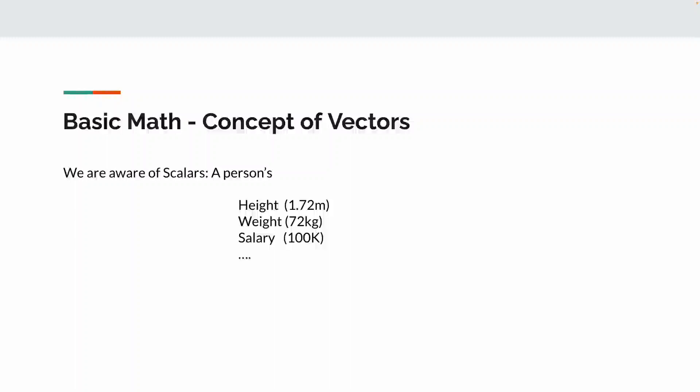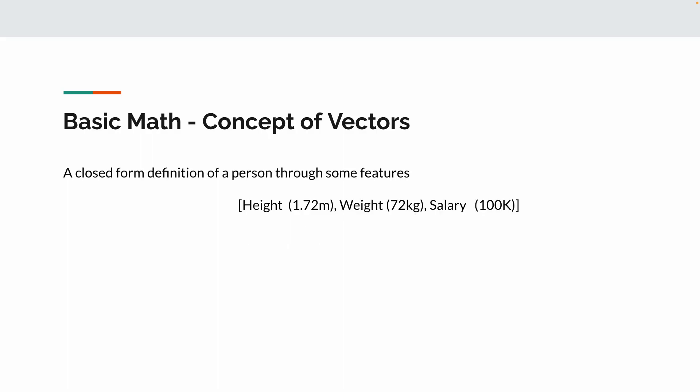You add on height, then weight, then how much salary that person gets. These are actually characteristics of that person. When you actually use multiple features to define that person, then we have to follow certain formats. For example, here we put those in third bracket: height, weight, and salary, and then we close the bracket.